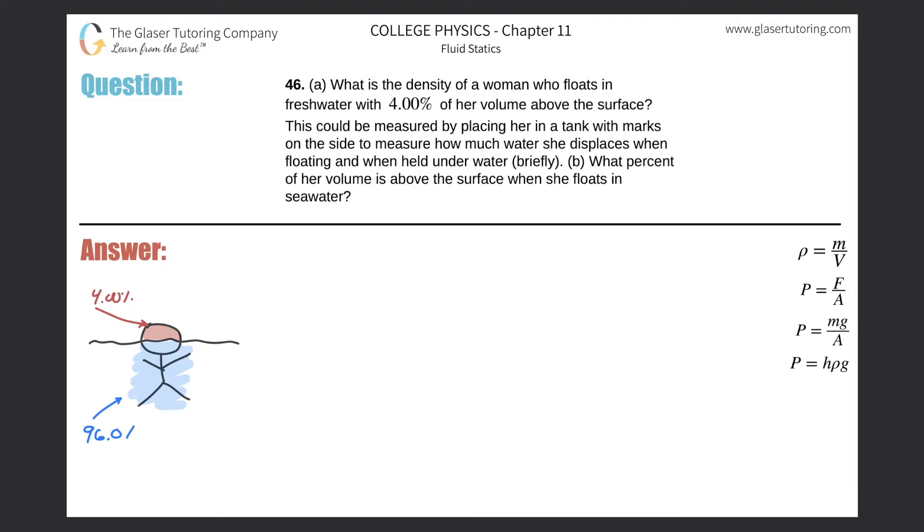Number 46, letter A. What is the density of a woman who floats in fresh water with 4% of her volume above the surface? This could be measured by placing her in a tank with marks on the side to measure how much water she displaces when floating and when held underwater, only briefly.